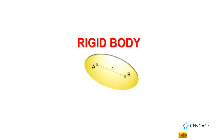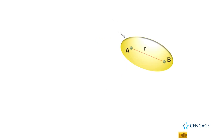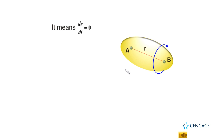Now let us discuss one very important and interesting thing about a rigid body. Let us make this diagram. These are points A and B separated at a distance r, and this rigid body is rotating. The separation r is constant, which means dr/dt should be equal to 0. Here dr/dt is the rate of change of separation between A and B — the distance between A and B is not changing with respect to time.